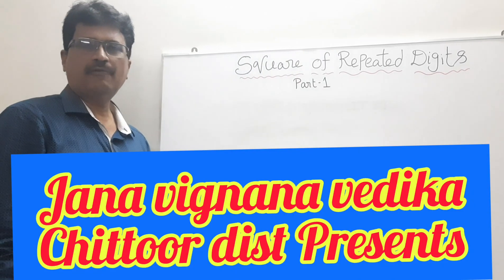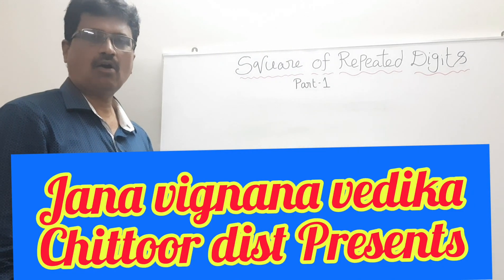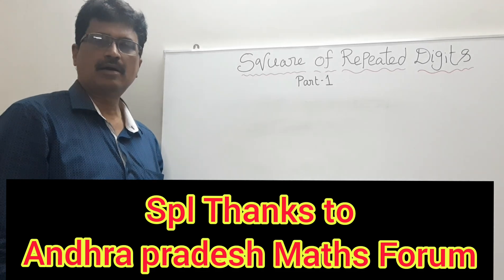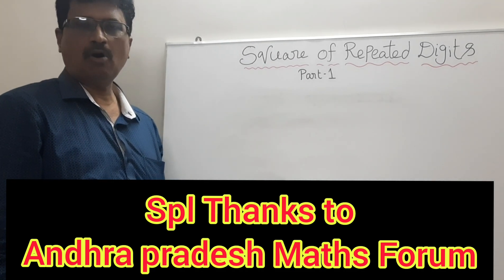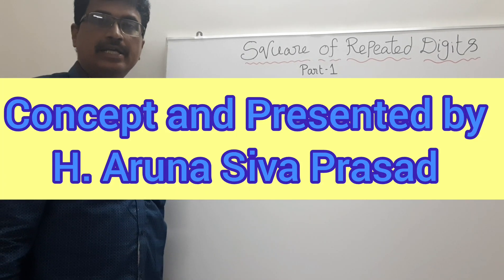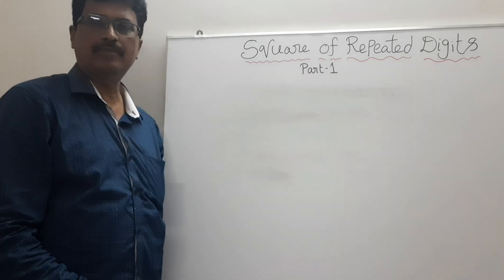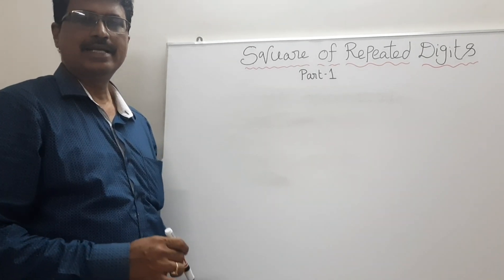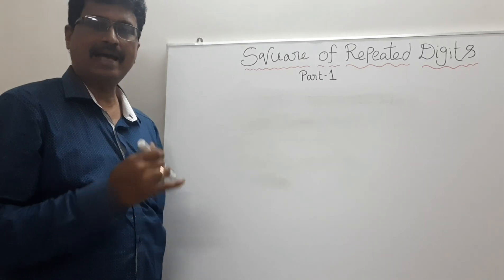Hi friends, today we are going to discuss square of repeated digits, part 1. In this part, we are discussing the repeated digits of the squares of three multiples. What are the three multiples? 3, 6, 9.